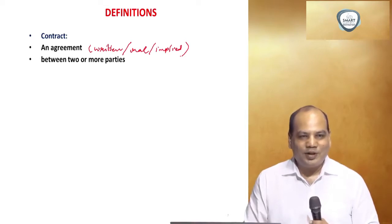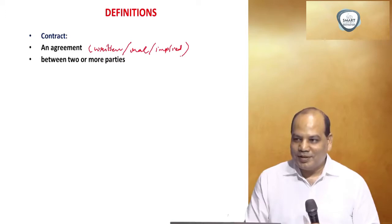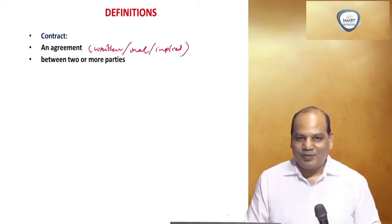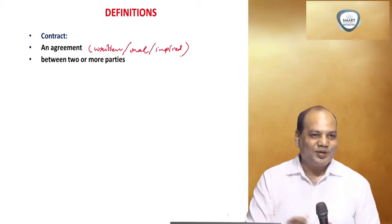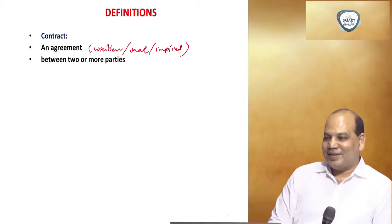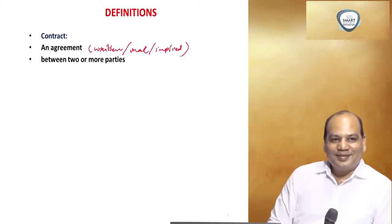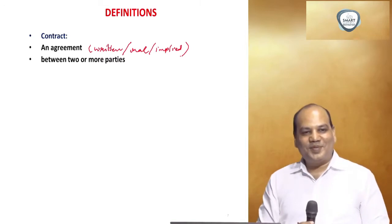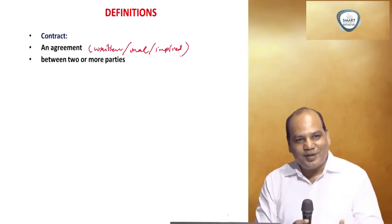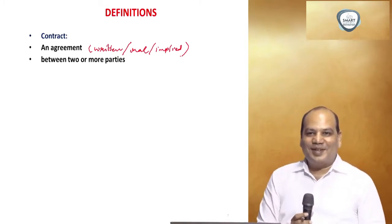For example, when you go to an institute and say you want admission in the Financial Reporting subject, you don't sign an agreement on a 100-rupee stamp paper — it is an oral or implied agreement. That if you pay the fees for FR, it is assumed that as per the syllabus all chapters will be completed in the given time.